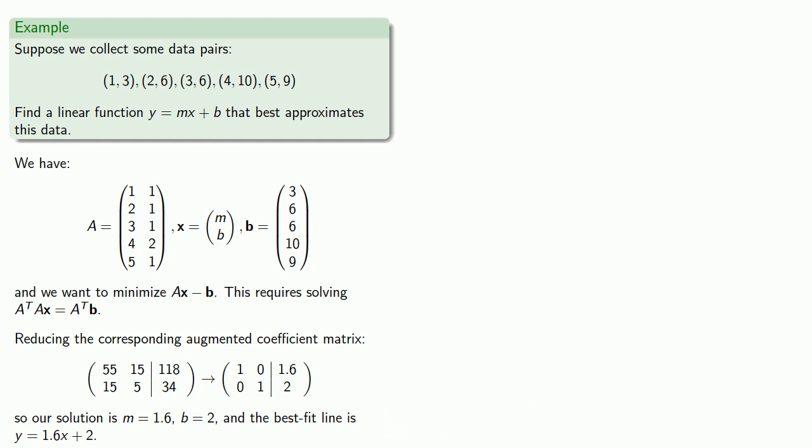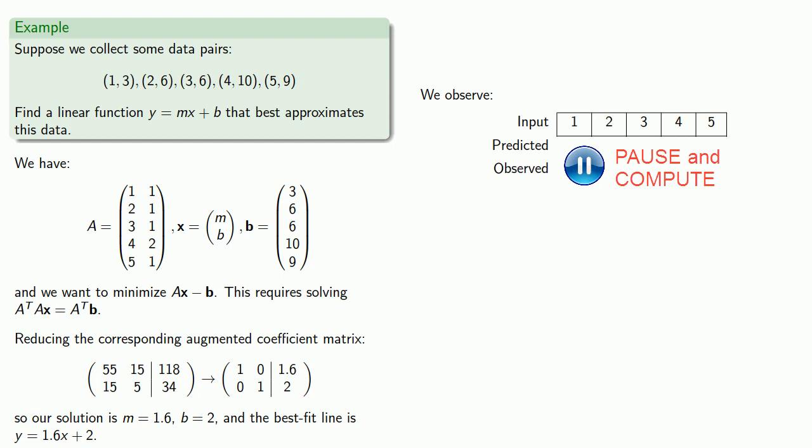And just as a follow-up to this problem, we might compare what our predicted values are using this best fit equation and the observed values. So our inputs, 1, 2, 3, 4, 5, give us predicted values. And if we compare those to our observed values, we see there is a reasonably good fit.